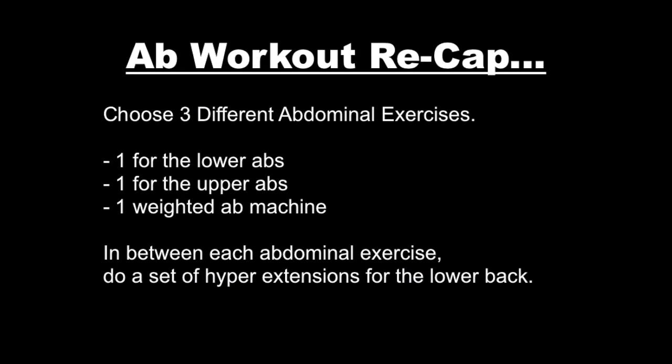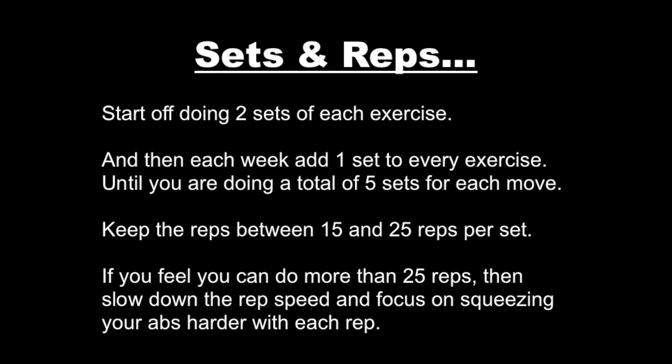To recap this workout: choose three different abdominal exercises — one move for the lower abs, one move for the upper abs, and then a weighted abdominal machine. In between each abdominal exercise, do a set of hyperextensions for your lower back. For sets and reps, start off doing two sets for each exercise, and each week add one set to every exercise until you're doing a total of five sets for each move. Keep your reps between 15 and 25 per set.